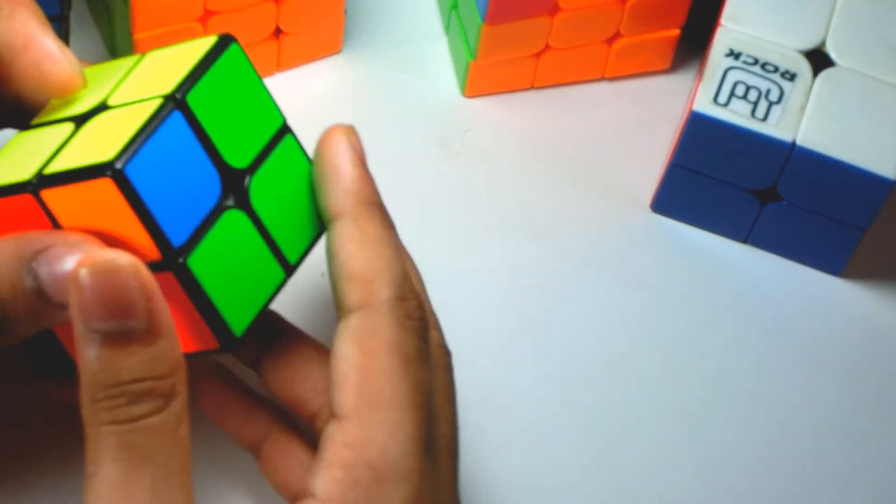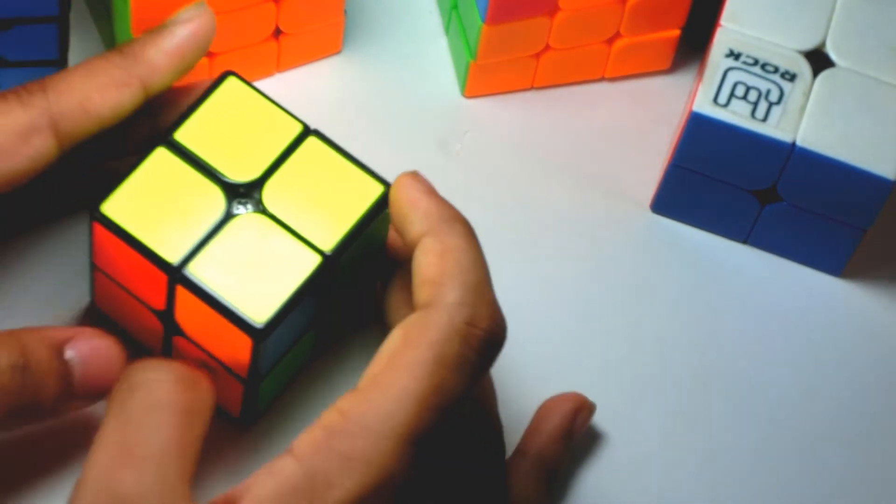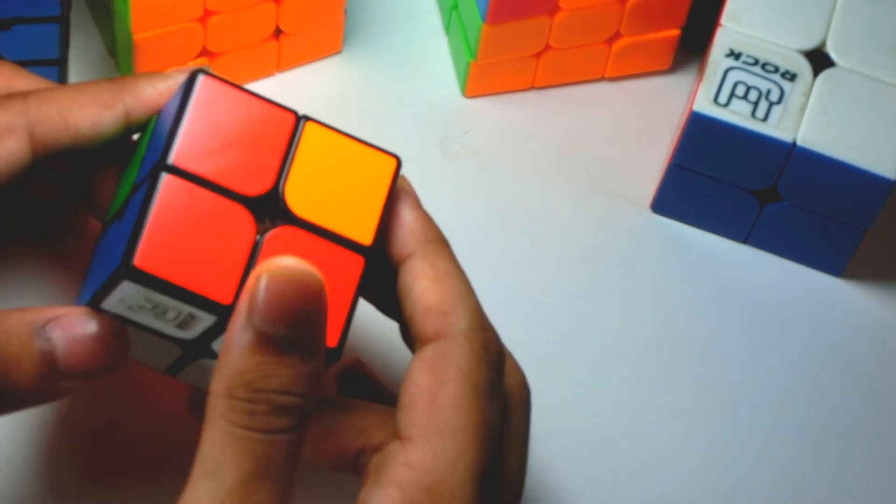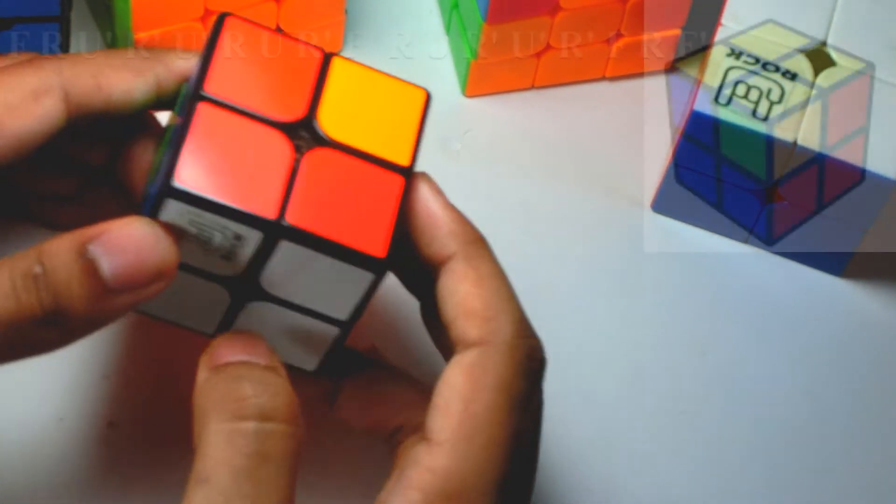But as the 2x2 does not have any edges, it's just switching these two corners. And as you guys can see, the algorithm's on your screen. Let's begin.